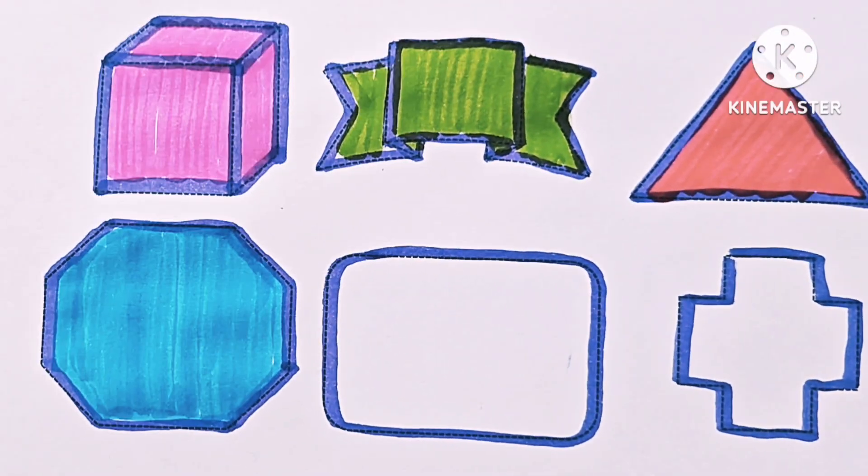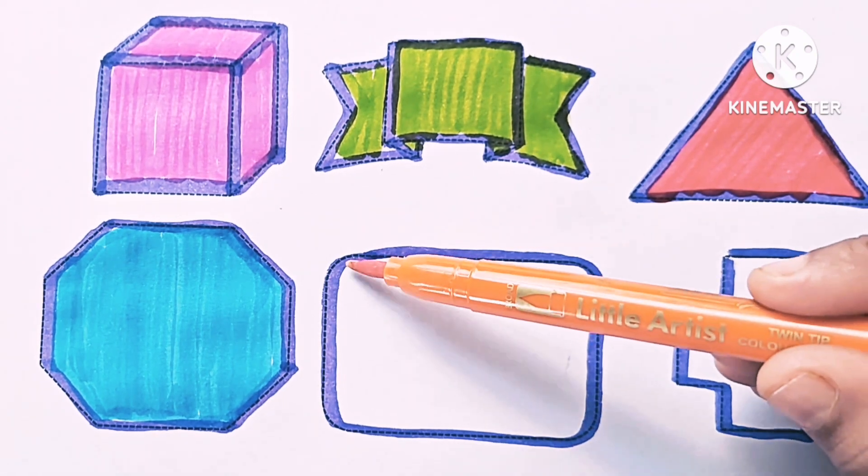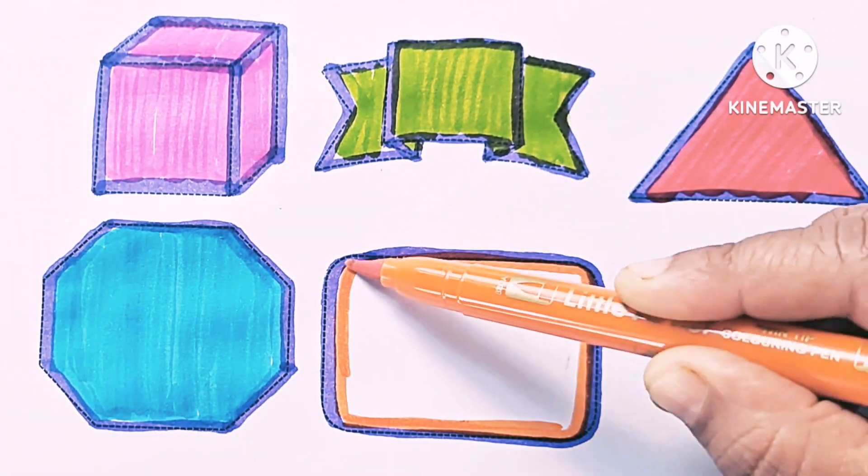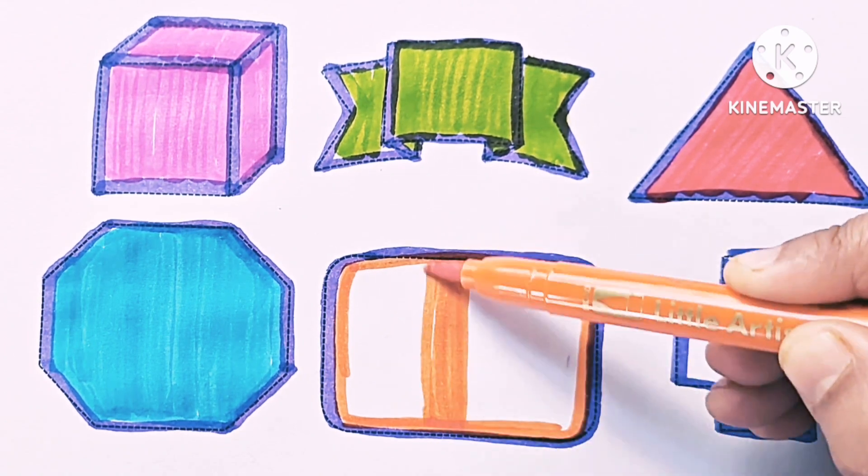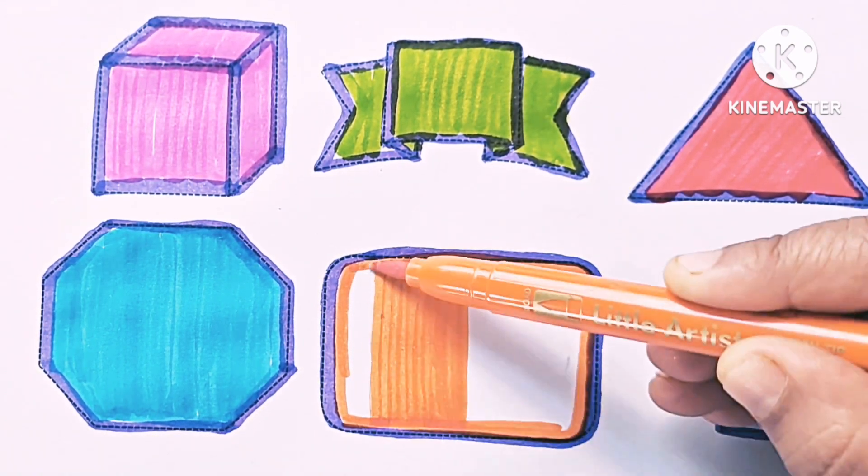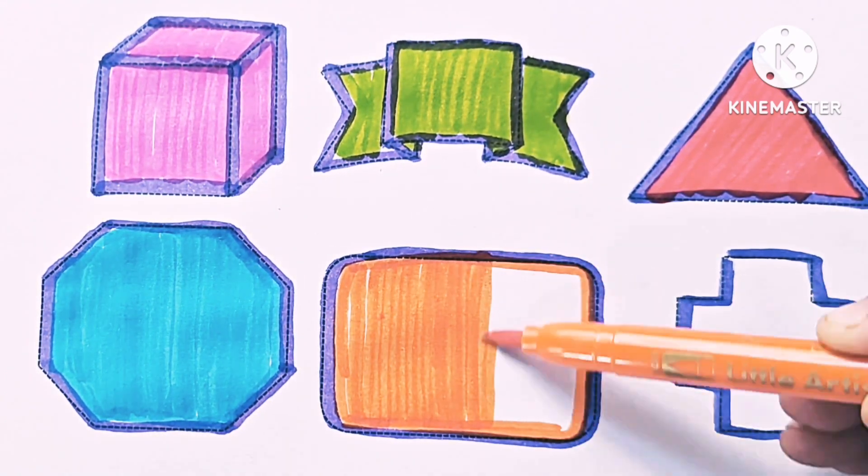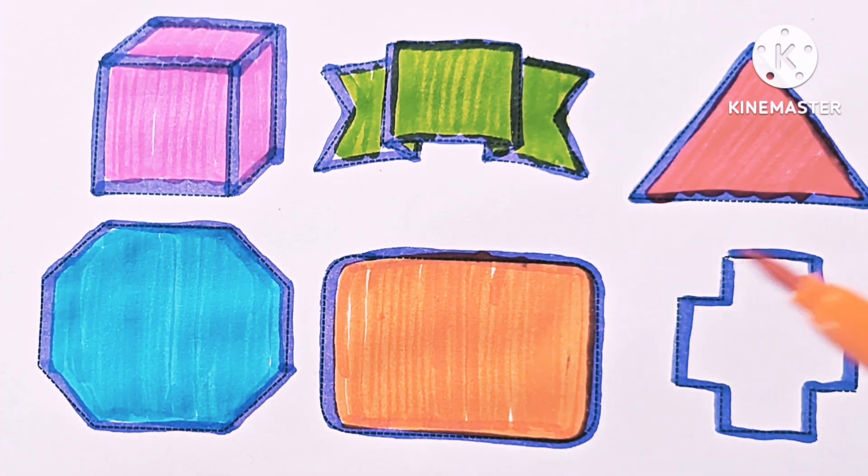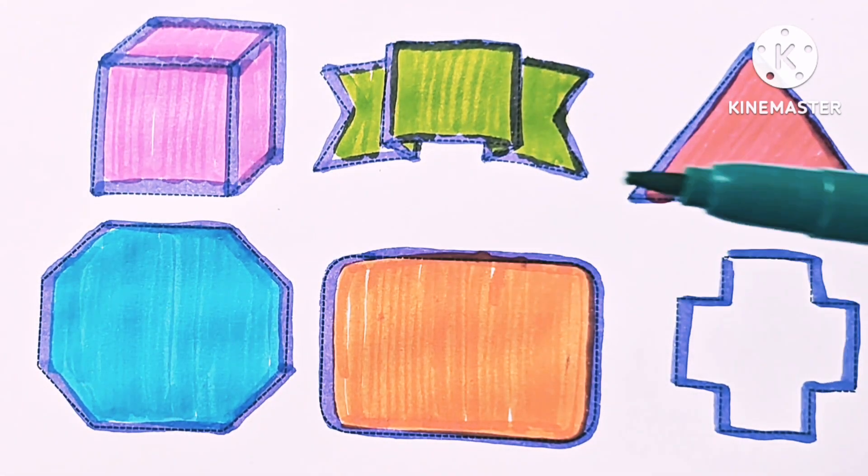Octagon, orange color. Rounded rectangle. Dot, green.